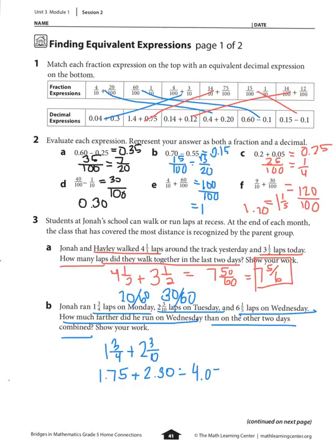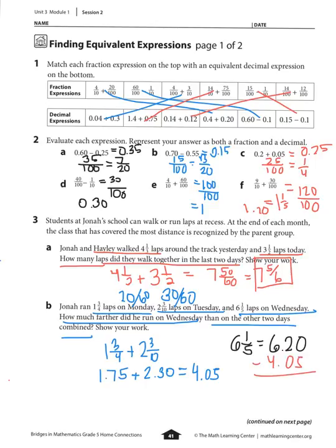Now how much farther did he run on Wednesday? Wednesday was 6 and 1 fifth laps. Thinking about money, 1 fifth of a dollar is 20 cents, so that's 6 and 20 hundredths. Comparing 6 and 20 hundredths to 4 and 5 hundredths, I subtract to find the difference, and I get 2 and 15 hundredths laps more on Wednesday.